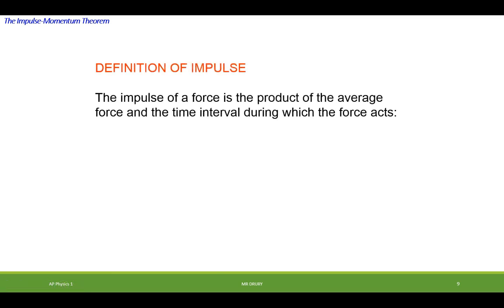So what is the definition of impulse? Impulse of a force is the product of the average force and the time interval which the force acts. It has a symbol J. Impulse has a symbol J. And it's equal to force, which is a vector, times time.